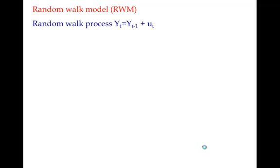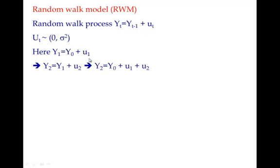The equation of the random walk model is yt = yt-1 + error term, where the error term follows a normal distribution with mean 0 and some variance. Each term is related to the last term plus an error term. So y1 is linked with y0 plus one error term, y2 is linked with y1 plus an error term, and substituting y1 gives y2 = y0 + u1 + u2.